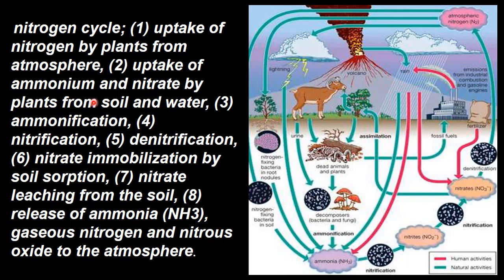Uptake of ammonium and nitrate by the plants from soil and water. Ammonification is actually dead organic matter decomposed by bacteria and fungi. Then denitrification — this is called denitrification by soil absorption, and nitrate immobilization by soil absorption. Then release of ammonia and gaseous nitrogen and nitrous oxide into the atmosphere — this is called the nitrogen cycle.